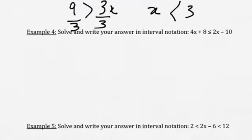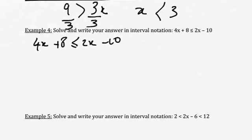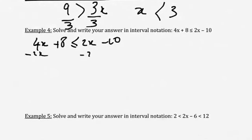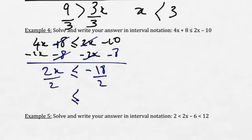Let's try to do example number 4. What I'm going to do is exactly the same as previously. I'm going to have 4x plus 8 less than 2x minus 10. So I subtract 2x from both sides and subtract 8 from both sides. My symbol doesn't change, and I end up with 2x on the left and negative 18 on the right. I divide by 2 — a positive number — so my symbol doesn't change, and I get x less than or equal to negative 9.